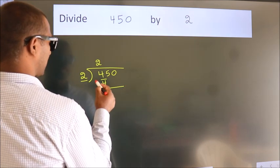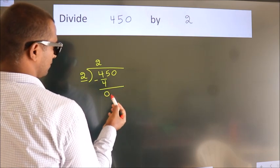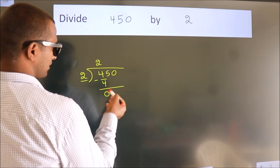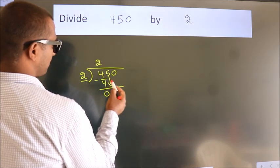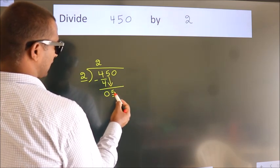Now we should subtract. We get 0. After this, bring down the beside number. So 5 down. So 5.